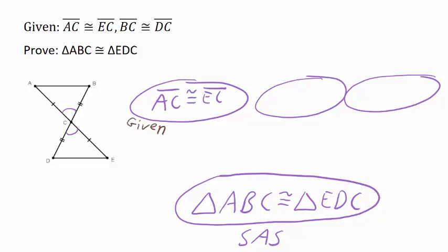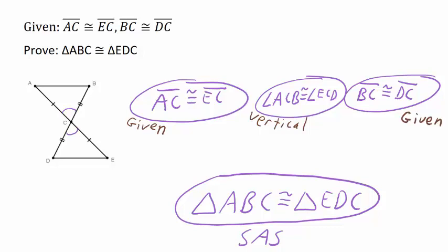So far we have one pair of congruent sides and a pair of congruent angles. Angle ACB, that's the angle on top, is congruent to angle ECD because those are vertical angles. So far we have one pair of congruent sides and a pair of congruent angles, so we need one more pair of congruent sides in our flowchart. Line segment BC is congruent to line segment DC because that was given information.